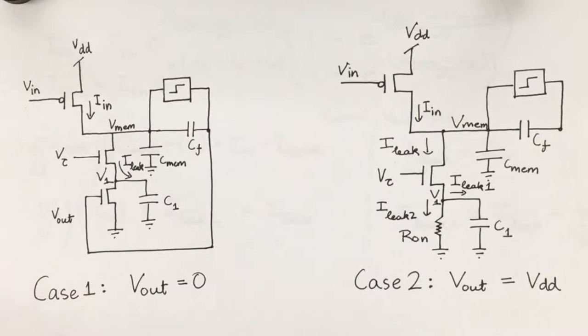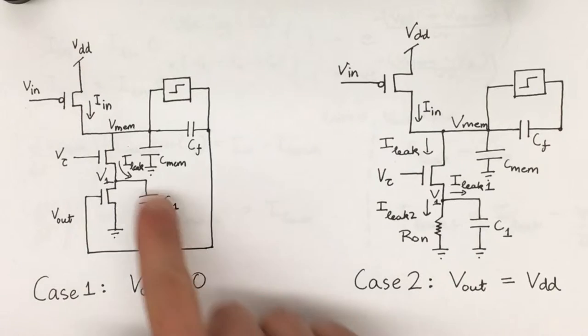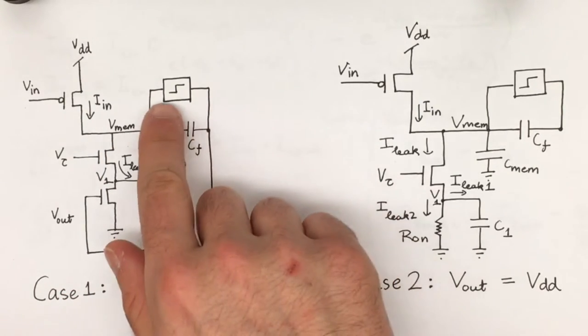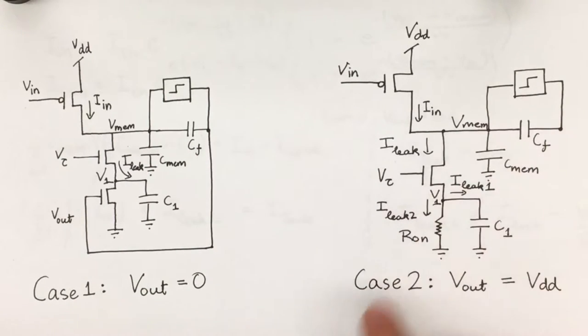Now we'll go into the two cases, which is pretty basic. If Vout is equal to zero or Vdd, depending on whether or not Vmem reaches some threshold defined by a bias voltage that is put into this comparator.